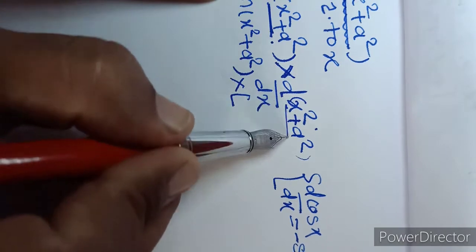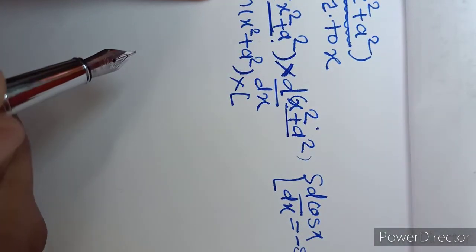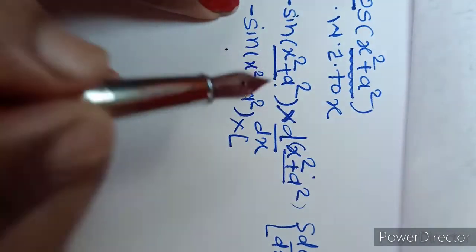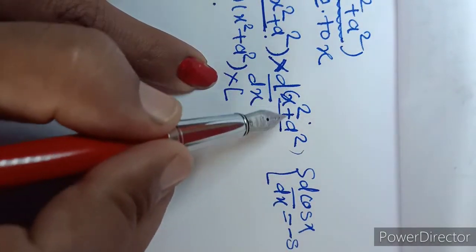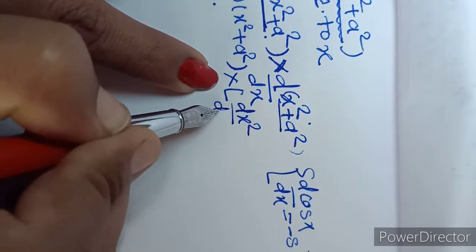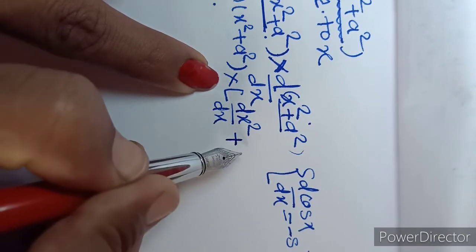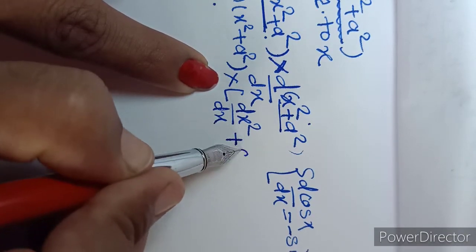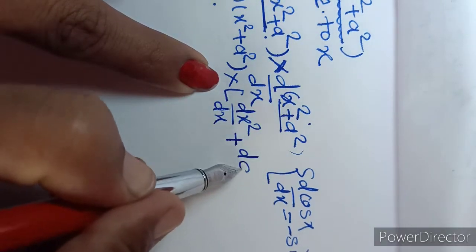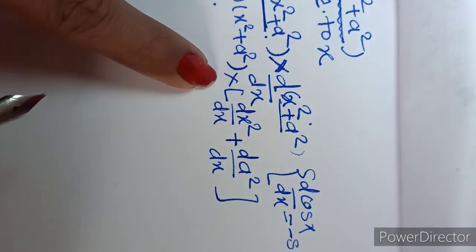These two functions are connected by addition, so we will use the rule for derivative of u plus v — that is, we take the separate derivative of each term. So we take the derivative of x² with respect to x and the derivative of a² with respect to x.